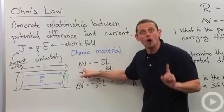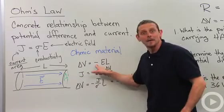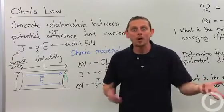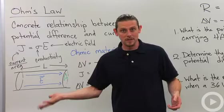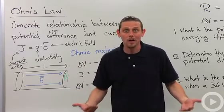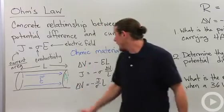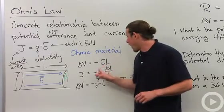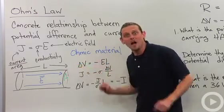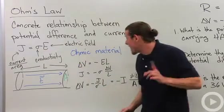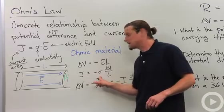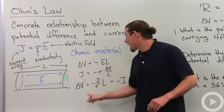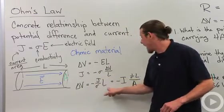The potential difference across this wire is given by negative electric field times length — that's just like the work relationship: work equals force dot displacement, and change of potential energy equals minus the work, which is where this minus sign comes from. We can solve this for the electric field and plug that into the ohmic relationship, giving us J equals minus sigma times delta V over L. Solving for delta V gives us delta V equals minus J divided by sigma times L.